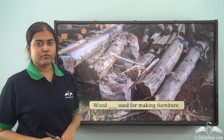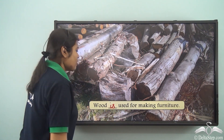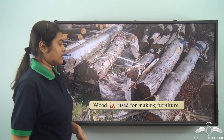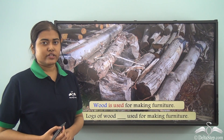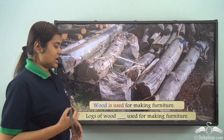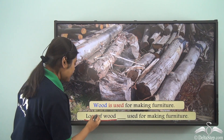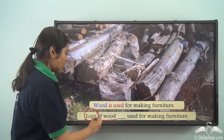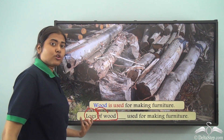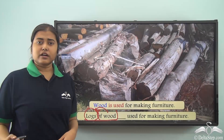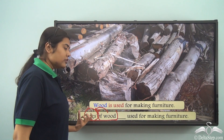Wood is an uncountable noun, so with uncountable nouns we always take a singular verb: wood is used for making furniture. But if we say 'logs of wood dash used for making furniture,' shall we use 'is' or 'are'? Though 'logs of wood' entirely is the subject, the phrase 'of wood' is describing logs — so the verb should agree with the number of the noun 'logs.' Now logs is a plural and countable noun.